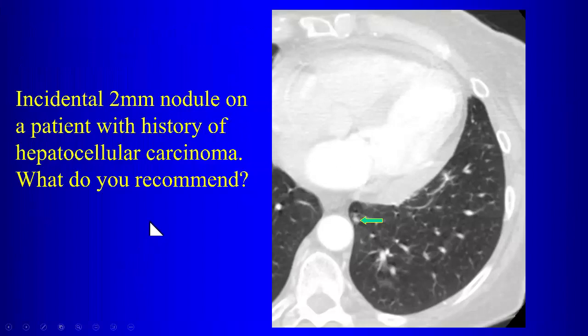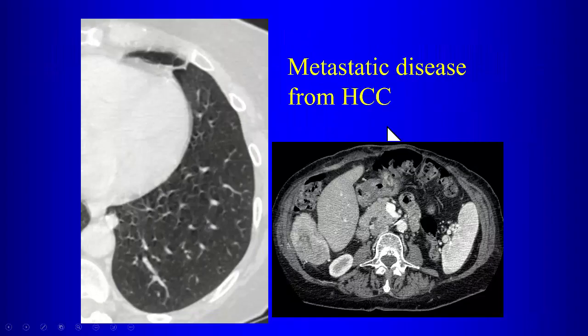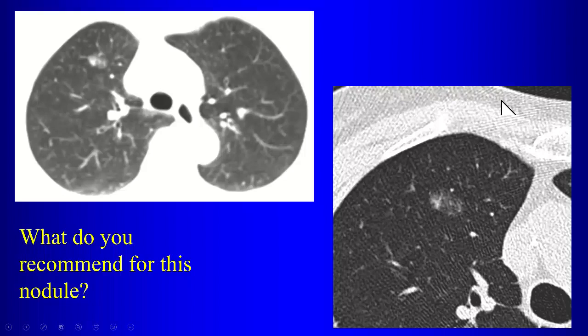For a patient with a history of malignancy — such as hepatocellular carcinoma — we don't apply the Fleischer Society recommendations, because any nodule could be a metastatic lesion. There are no standard recommendations for how soon to follow up in a cancer patient. In this case, at three months the small nodule was unchanged; at six months it had grown — that was a metastatic lesion from hepatocellular carcinoma.